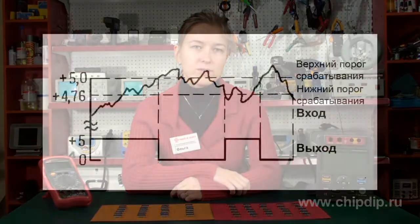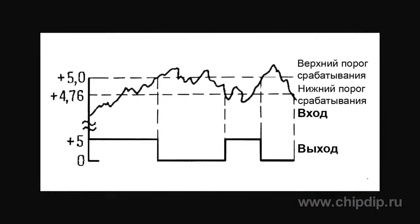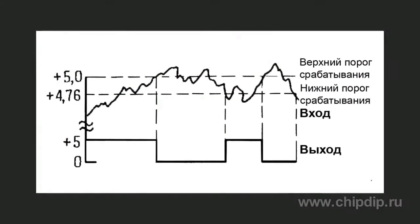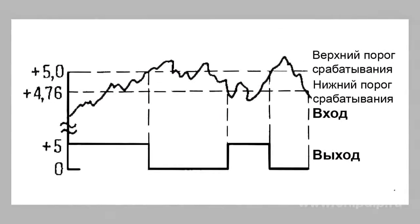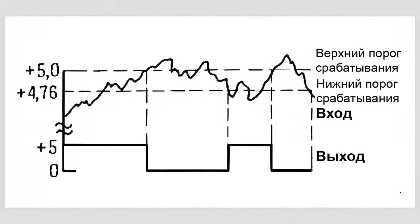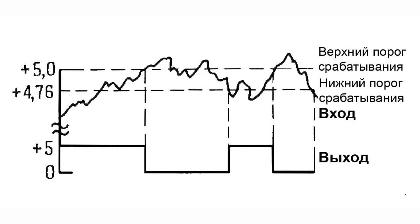In this case, the probability of the noise signal causing multiple output switchover is reduced. Apart from this, positive feedback also enables faster output switchover, regardless of input fluctuations' rate of change. This particular scheme is referred to as the Schmitt trigger.